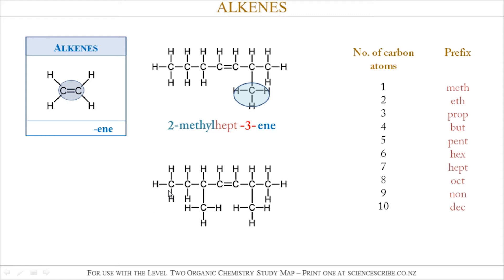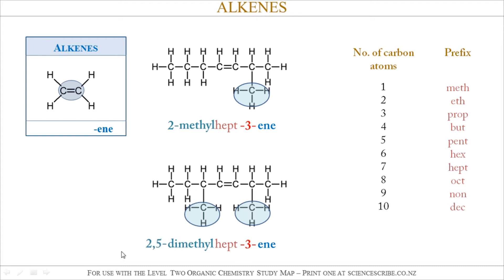Another example: same as before, look for the longest chain. I've got 7 carbon atoms again. That's hept-3-en, because the double bond is at position 3 as well. This time I have 2 methyl groups, which corresponds to 'dimethyl'. 'Di' is for 2, but I must say where both of those methyl groups are — I've got one at position 2 and one at position 5. So: 2,5-dimethylhept-3-en.